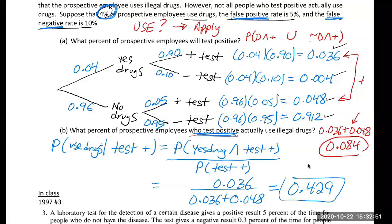That might sound counterintuitive, which is why employers will often have you take a second test if you test positive. It all depends on the specificity and sensitivity — how accurate the test is. These kinds of percentages are being discussed a lot nowadays because of COVID-19 testing and the false positive or false negative rates for those tests. Thanks for watching this video — see you next time.